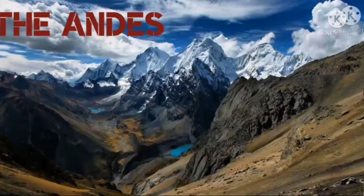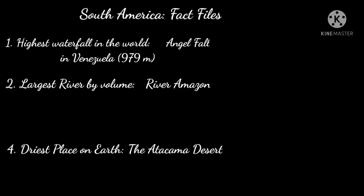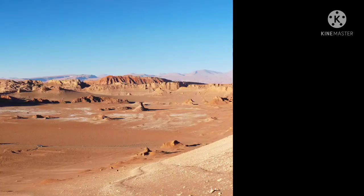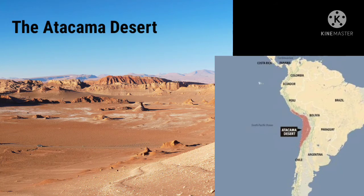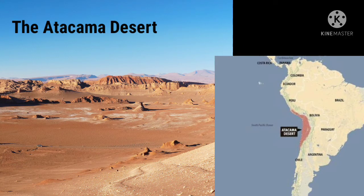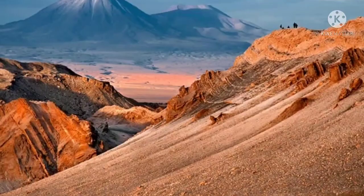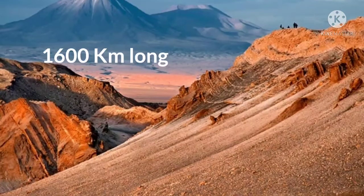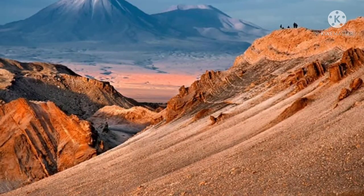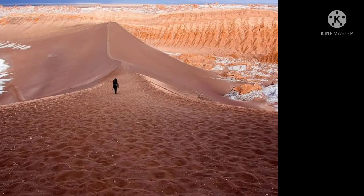The next fact file is the presence of the Atacama Desert. South America is also home to the world's driest desert — the Atacama Desert. It is a desert plateau in South America, about 1600 kilometers long along the western coastal plain. It receives very little rainfall, about one millimeter per year.